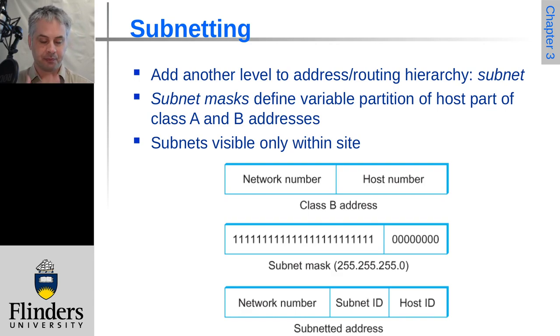But you can subnet within a class C, in which case you have less than eight bits of host ID. So you have a subnet mask that would probably be 255.255.255 dot something other than zero, like dot 240 would mean that four more bits were used for the network part and only four bits were available for the host part.